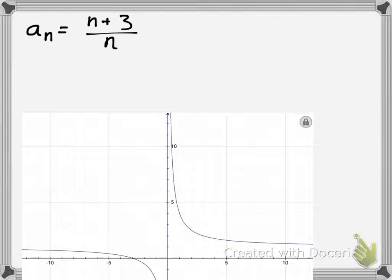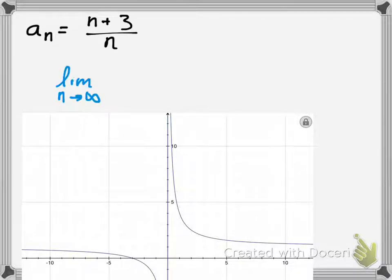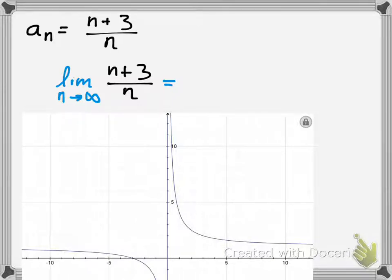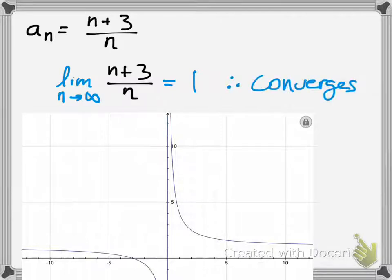So if you have the sequence where a_sub_n equals (n+3)/n, to find out if it converges or diverges, you simply take the limit as n approaches infinity of that function. You can make this into a function — a_sub_n, think of it as f(x), and I graphed it down here. If you just look at it limit-wise, you would notice that the limit goes to 1, and therefore it converges.